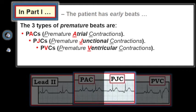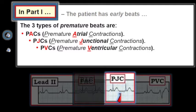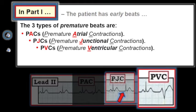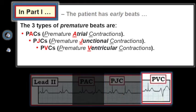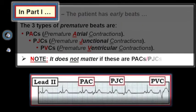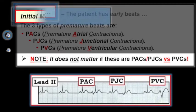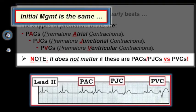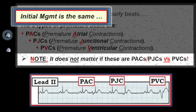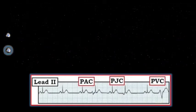PJCs are much less common than PACs; they may be preceded by a negative P wave with a short PR interval, or no P wave at all. In contrast, PVCs are early beats that are wide, look different, and are not preceded by any premature P wave. That said, we emphasized in part one that for practical purposes it really doesn't matter clinically whether early beats are PACs, PJCs, or PVCs, because the approach to management is essentially the same.